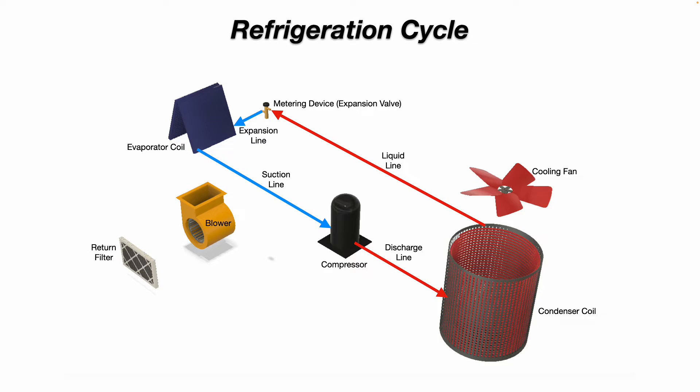It leaves the metering device as a lower-pressure, lower-temperature liquid with some flash gas on the expansion line going into the evaporator coil. Inside the evaporator coil, the refrigerant will change state again from a liquid to a vapor. It then leaves on the suction line as a cool vapor going back to the compressor. That cool vapor refrigerant also acts as a coolant to keep the compressor motor windings from overheating.